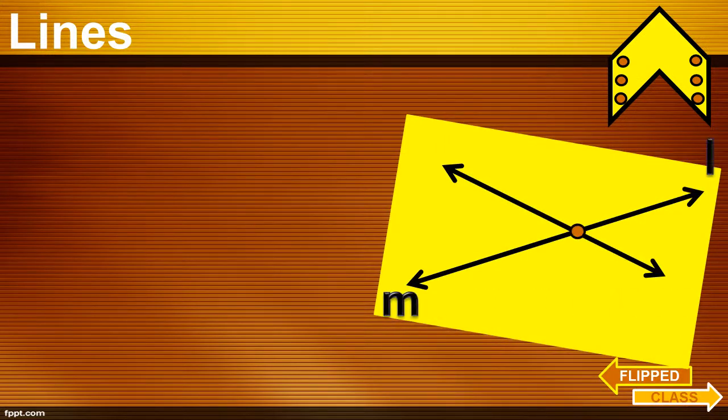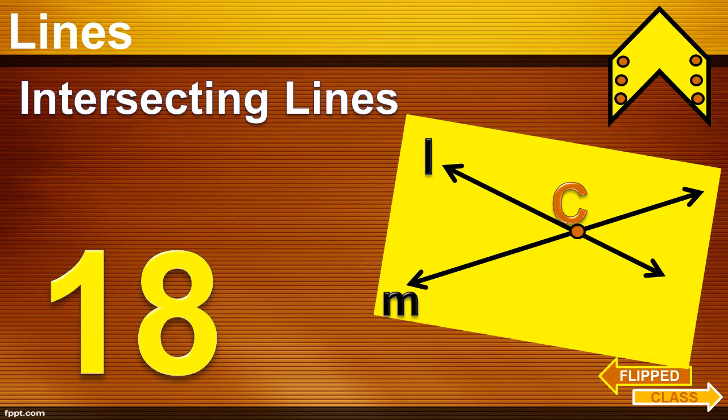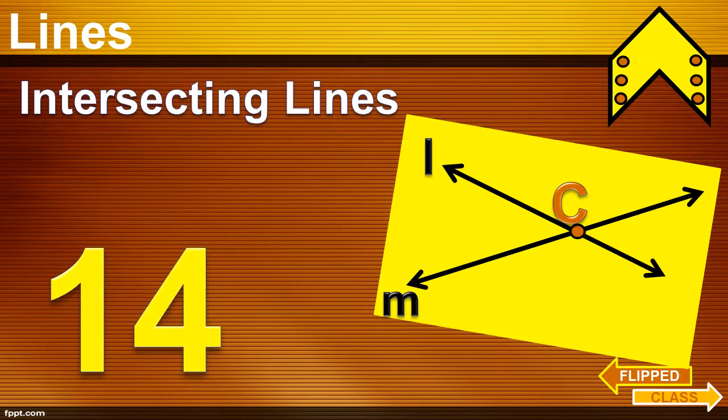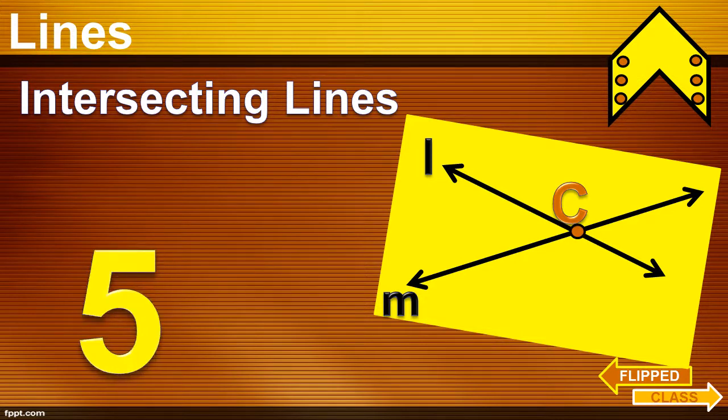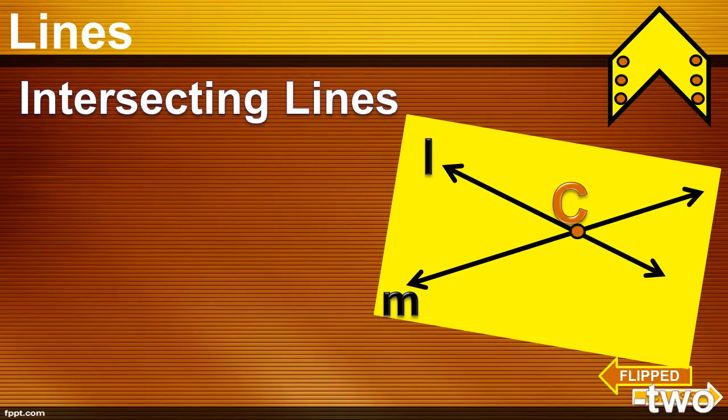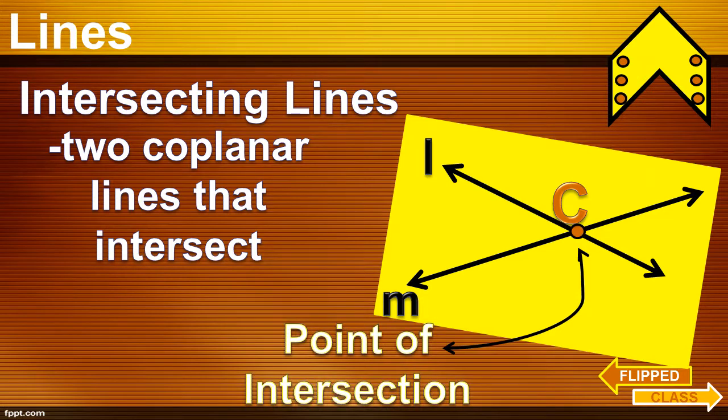Now, let's talk about lines. Let's consider this figure. We have line M and line L. We have here point C. These two lines here are called intersecting lines. If this situation is true, intersecting lines are actually two co-planar lines that intersect. They are two lines on the same plane, and they intersect. Point C, the common point of both lines, is called the point of intersection.